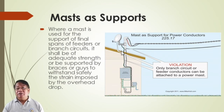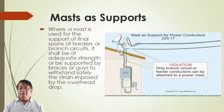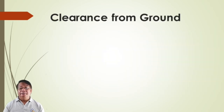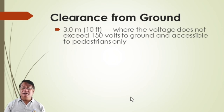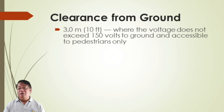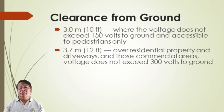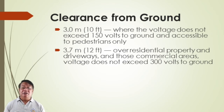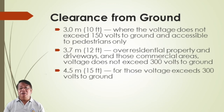For clearance from ground where voltage does not exceed 150 volts to ground and accessible to pedestrians only: 3.7 meters or 12 feet over residential property and driveways. For commercial areas where voltage does not exceed 300 volts, 12 feet or 3.7 meters is required. If more than 300 volts, it should be more than 4.5 meters or 15 feet.